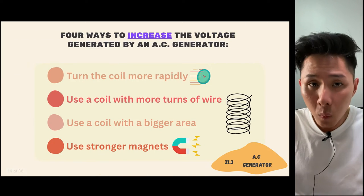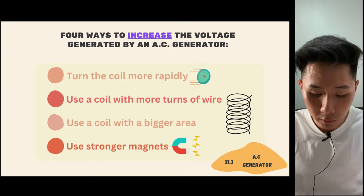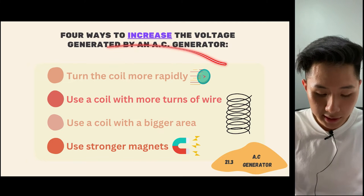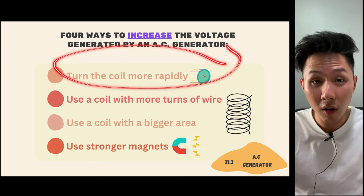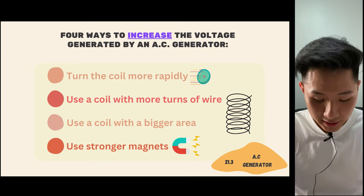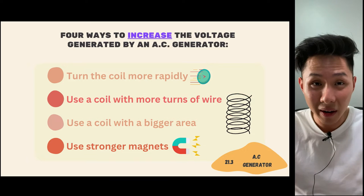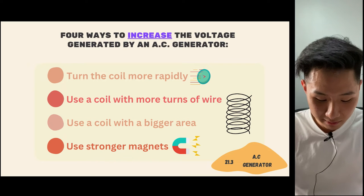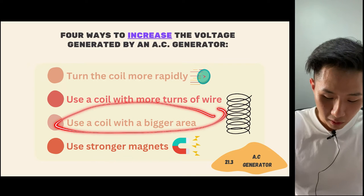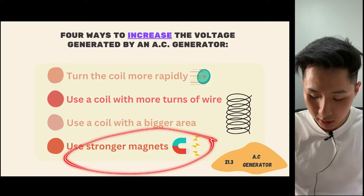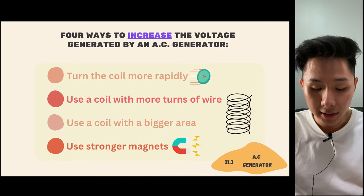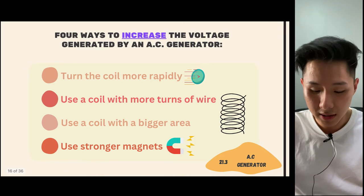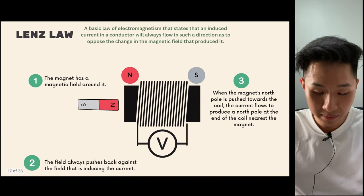There are four ways to increase the voltage generated by an AC generator: turn the coil more rapidly, use a coil with more turns of wire, use a coil with a bigger area, and use a stronger magnet.